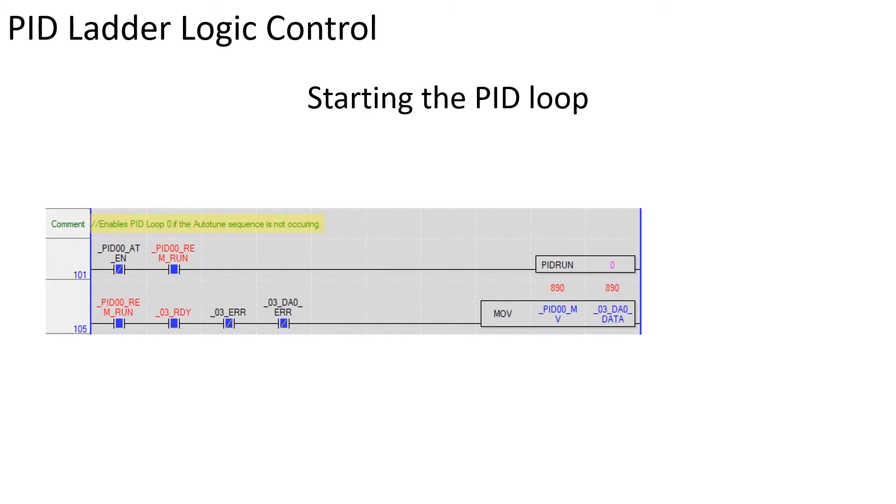The run shown starts the PID loop using the PID run instruction. If the auto-tune enable bit is off and the PID remote run bit is on, the PID run instruction starts the PID loop.